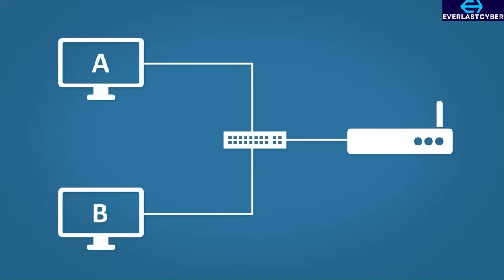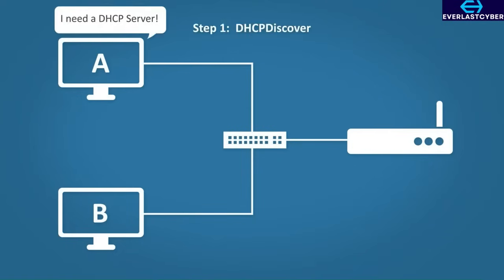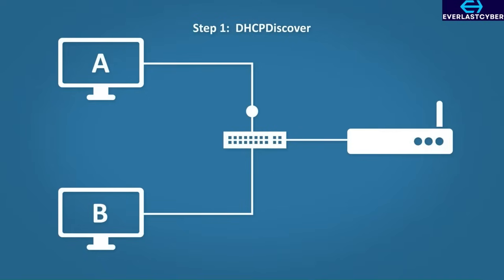So when you turn your PC on, if it doesn't have an address, it looks for a DHCP server. It just shouts out to everyone, hoping somewhere on the network there is a DHCP server. This is a broadcast message — all of the other devices get this message, look at it, and drop it. This is step 1, called DHCP Discover.